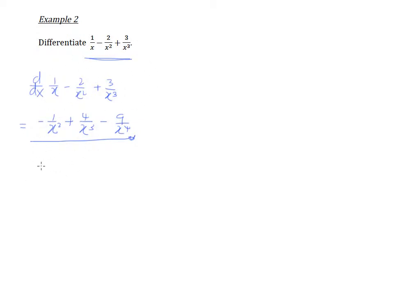Let me show you the basic that you need to know. The original method, which most school teachers will teach you, is to change all these fractions into index form. That means one over x becomes x to the power of negative one, this becomes two x to the power of negative two, and this becomes three x to the power of negative three, and then we differentiate.